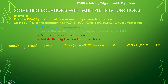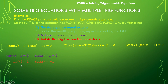We have the factor (tan x − 1)(cos x + 1) = 0. Setting each factor equal to zero and isolating the trig function gives us tan x = 1 and cos x = −1. Using the unit circle, tan x = 1 where the x and y values are exactly the same, giving us π/4 and 5π/4. Cos x = −1 gives us π. So our solution set is {π/4, 5π/4, π}.